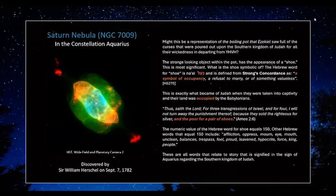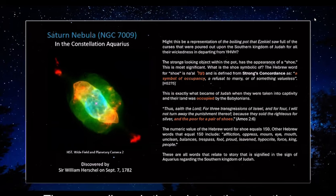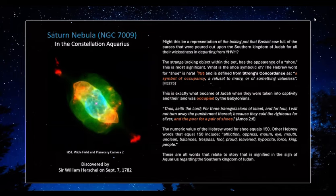The numeric value of the Hebrew word for shoe equals 150. So let's look up other Hebrew words that equal 150 and see if we can find meaning for the shoe in the pot. I found these words — all equaling 150 in Hebrew: affliction, oppress, mourn, eye, mouth, unclean, balances, trespass, fool, proud, leavened, hypocrite, force, king, and people. These are all words that relate to the story signified in the sign of Aquarius regarding the southern kingdom of Judah — you can associate all these words with the children of Israel. I thought that was pretty interesting.